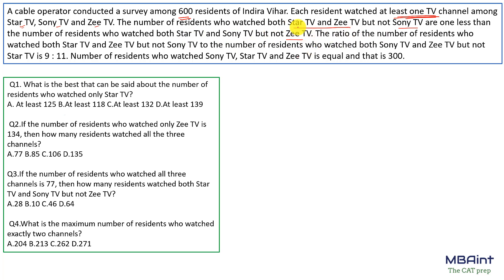Since we have conditions involving overlapping regions, we need a Venn diagram to represent the numbers and solve. Reading further: the ratio of the number of residents who watched both Star TV and Zee TV (but not Sony TV) to the number who watched both Sony TV and Zee TV is given. Let's draw the diagram and place all the information onto it.